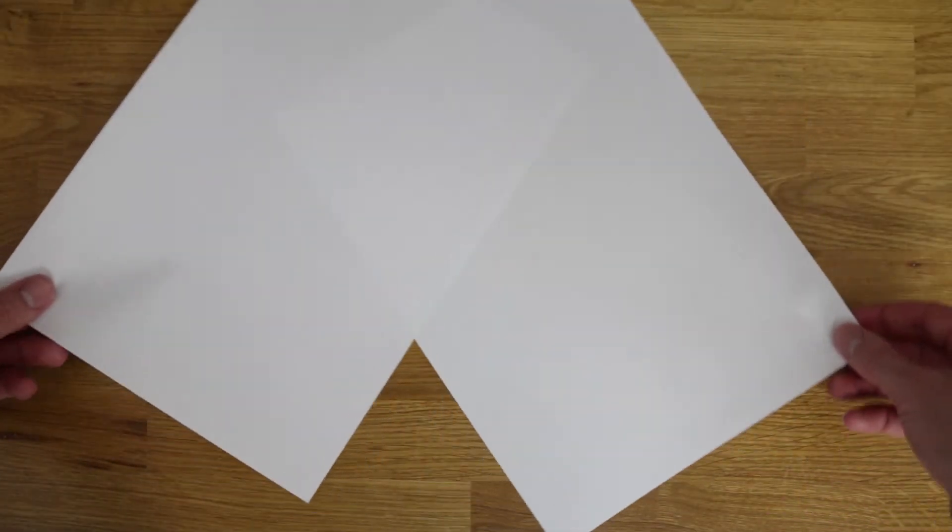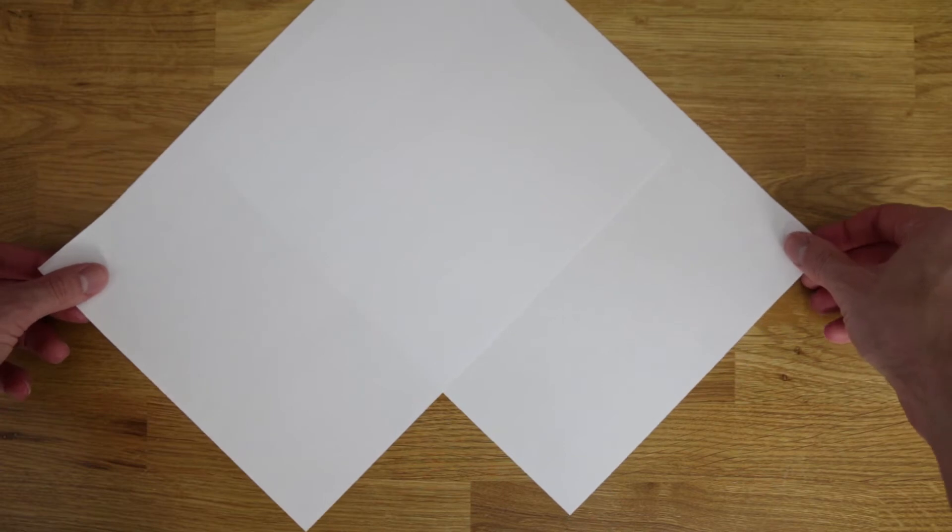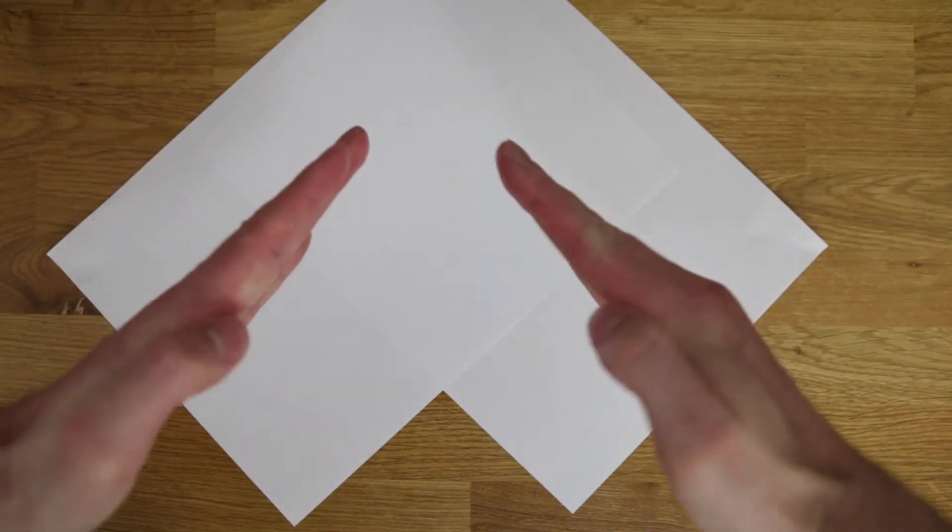All that you need to do this is a flat surface and two pieces of paper. White is obviously easiest, and A4 size is probably about right. Place the two pieces of paper on your surface. Cross them over, one on top of the other, so they're perpendicular to each other.